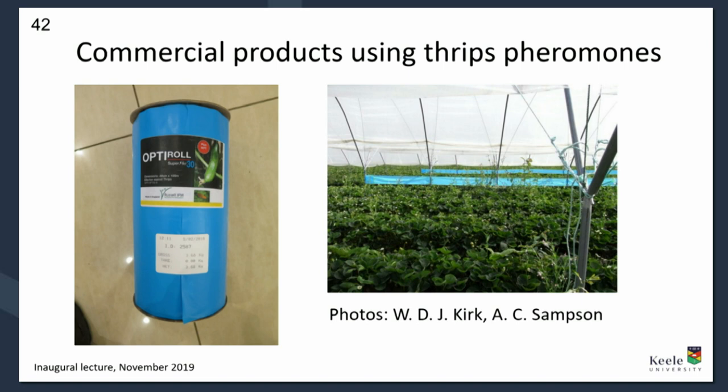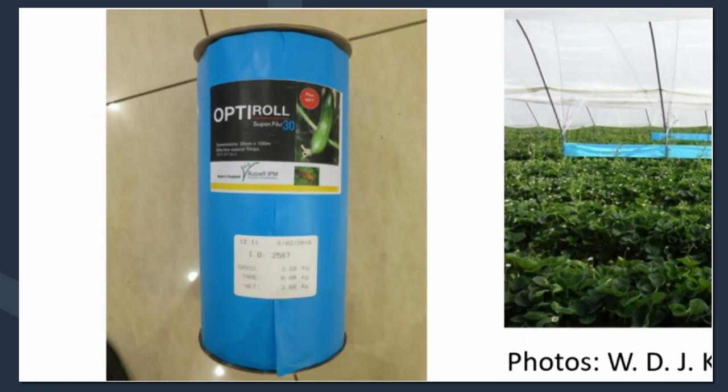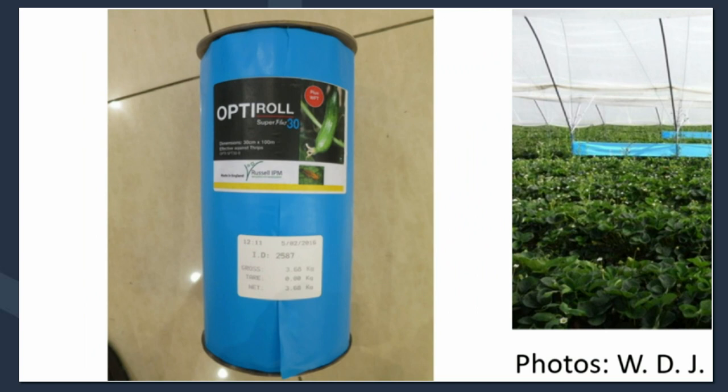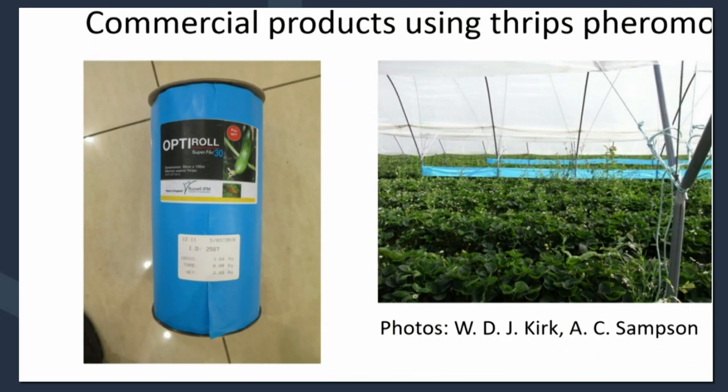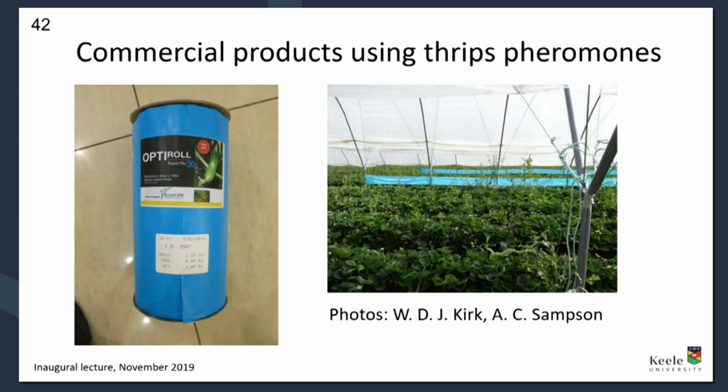A more recent development by Russell IPM: they've taken the pheromone, microencapsulated it, and coated it on the glue of roller traps — about 30 centimetres tall and 100 metres long when rolled out. Blue is a colour that particularly traps western flower thrips. The Opti-Roll Super Plus product has the pheromone added, enhancing trap catch. In high-value crops like strawberries in the UK, you can roll out these traps with pheromone, trap a lot of thrips, and reduce their numbers in your crop, reducing damage. Since high-value produce means a small loss is quite a lot of money for the grower, they can afford relatively expensive treatments.